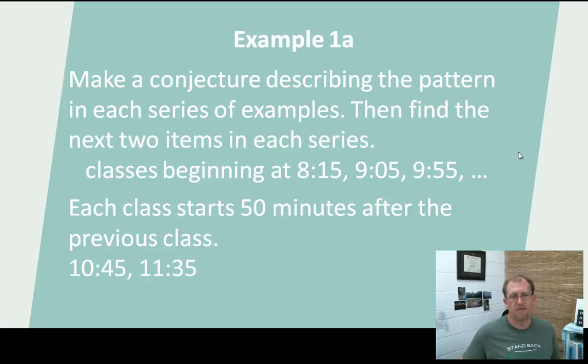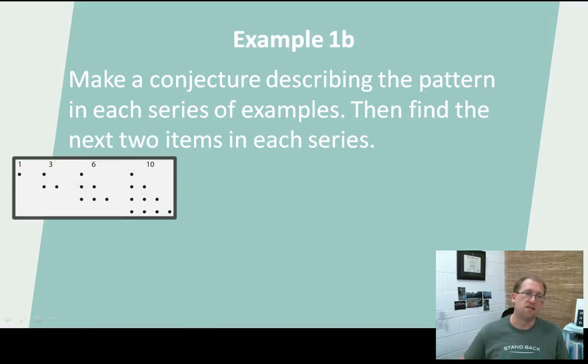Here's another example of inductive reasoning. I have an item that is just one dot, and then I put another row of two, then I put another row of three, and then a row of four. What's the next two? A row of five and a row of six, right? So my next two numbers would be 15 and then 21. These are just examples of inductive reasoning: you have a couple of examples, you infer a pattern, you predict what happens next.